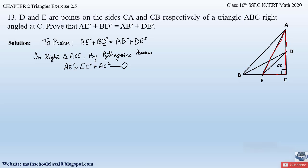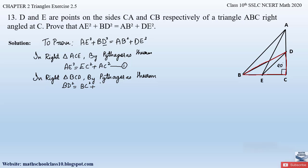Again taking the hint from what we have to prove, we need BD². The right-angle triangle formed with side BD is triangle BCD. Consider triangle BCD. In right triangle BCD, by Pythagoras theorem, the side opposite the right angle is BD, so BD is the hypotenuse. Therefore BD² = BC² + CD². Let this be equation 2.